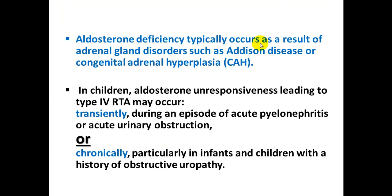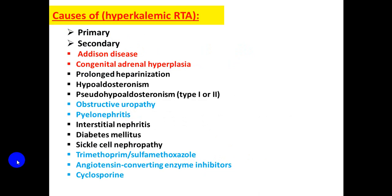Aldosterone deficiency typically occurs as a result of adrenal gland disorders such as Addison disease or congenital adrenal hyperplasia. Type 4 RTA could be a transient condition due to acute pyelonephritis or acute urinary obstruction, or it may be a chronic condition, particularly in infants and children with a history of chronic obstructive uropathy. Causes include primary and secondary Addison disease, congenital adrenal hyperplasia, obstructive uropathy, pyelonephritis, sickle cell nephropathy, diabetes mellitus, or drugs like trimethoprim-sulfamethoxazole, ACE inhibitors, and cyclosporine.